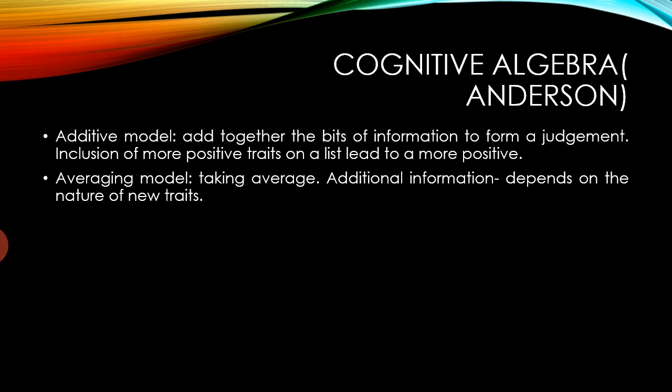There are two models for forming impressions: the additive model and the averaging model. In the additive model, we simply add together bits of information about a person to form a judgment. In the averaging model, we start the same way but take an additional step — dividing by the number of traits to form an average. What is particularly important in the averaging model is that the inclusion of additional information cannot necessarily make the impression more positive; it depends on the nature of the new traits.